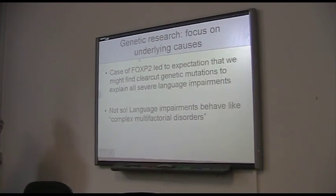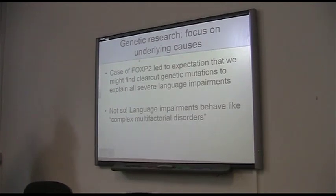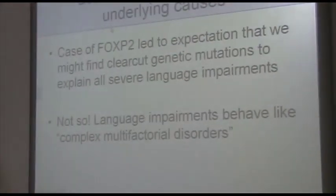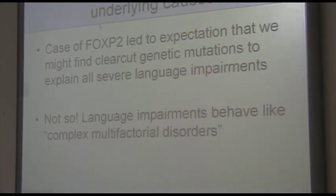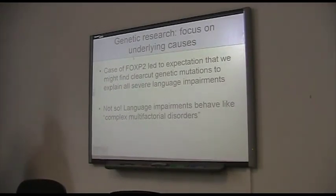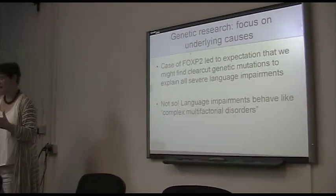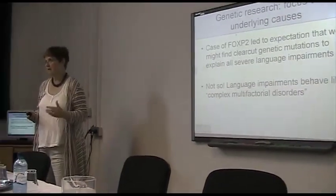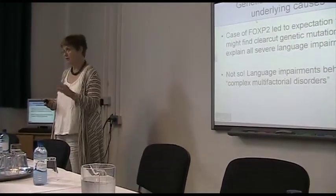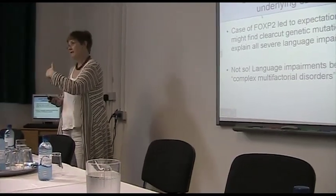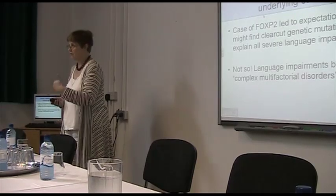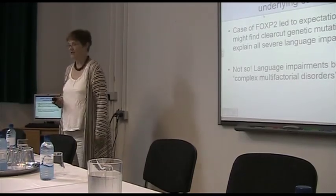When the FOXP2 mutation was discovered — which most people would have heard about — this is the famous KE family who had a mutation in a single DNA base pairing. Affected individuals in the family were associated with a quite severe speech-language disorder. You could see this running through the family, and it was discovered partly because it was so clear-cut: if you've got this mutation, there's a 50% chance that your kids will get it, and if you've got it, you're pretty well certain to have a speech-language disorder.